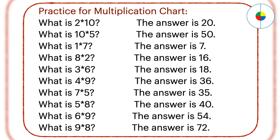What is 10 times 5? 10 times 5 is the same as 5 times 10. Any number multiplied by 10, just add 0 to the 1's position. So 5 times 10 is 50. What is 1 times 7? 1 times 7 is the same as 7 times 1. Any number multiplied by 1 is the same number. So the answer is 7.